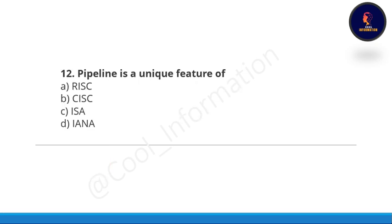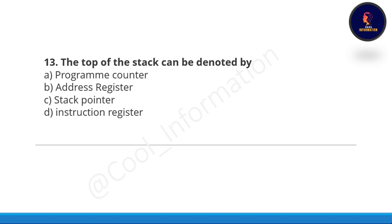Question number twelve: pipeline is a unique feature of what — RISC, CISC, IC, or IANA? The correct option is RISC. Very simple question.